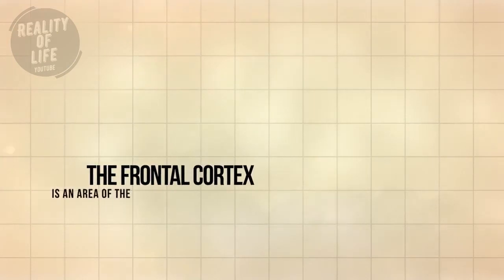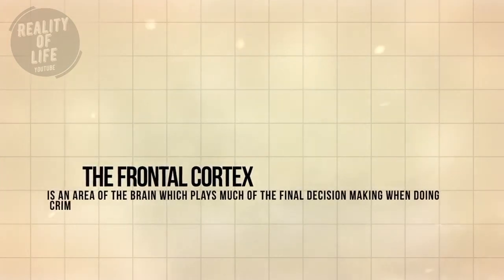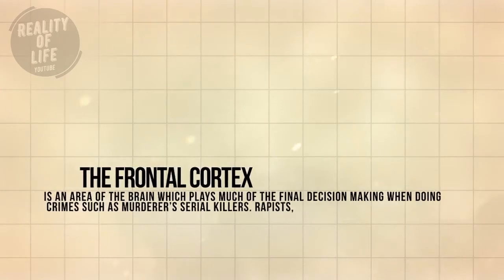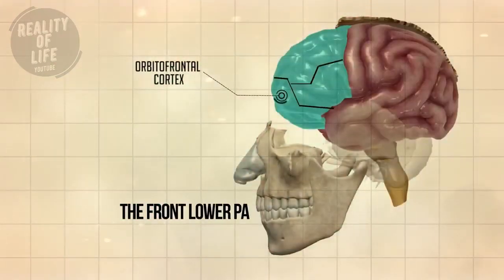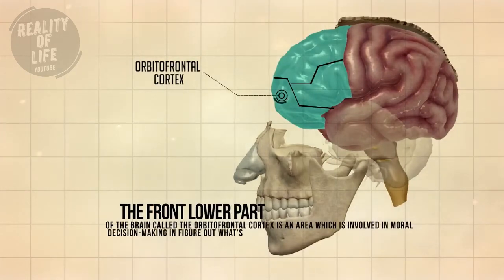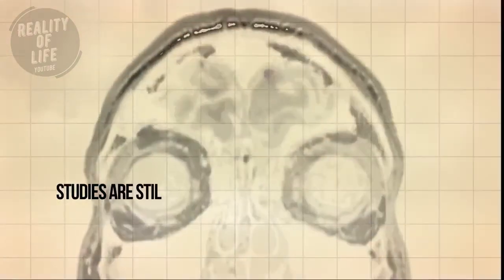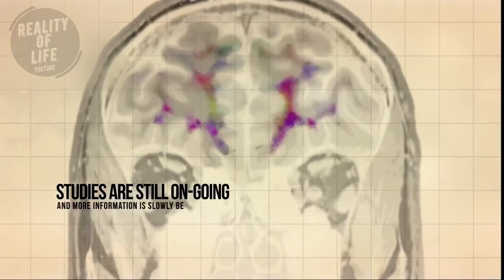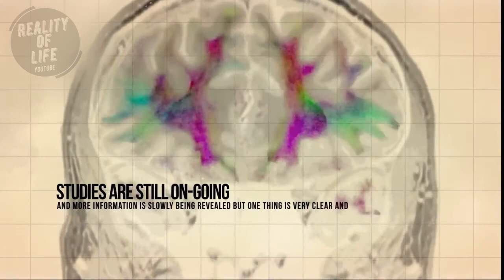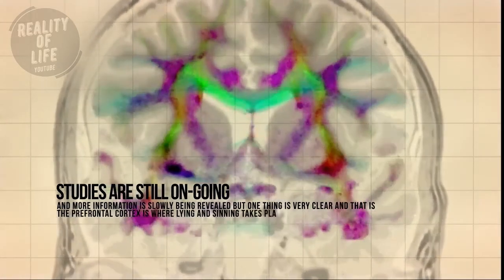The frontal cortex is an area of the brain which plays much of the final decision-making role when doing crimes such as murders, serial killings, rape, robbery, etc. The front lower part of the brain, called the orbital frontal cortex, is involved in moral decision-making — figuring out what's right versus what's wrong. They have noticed a similar pattern in the brain scans of criminals in this region. Studies are still ongoing, but one thing is very clear: the prefrontal cortex is where lying and sinning takes place.